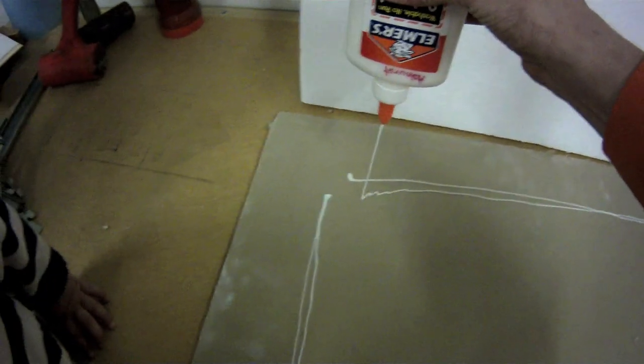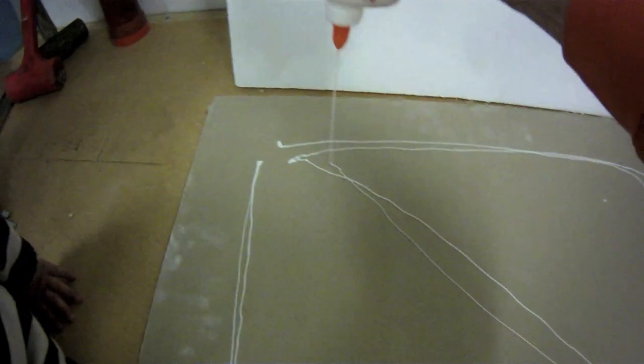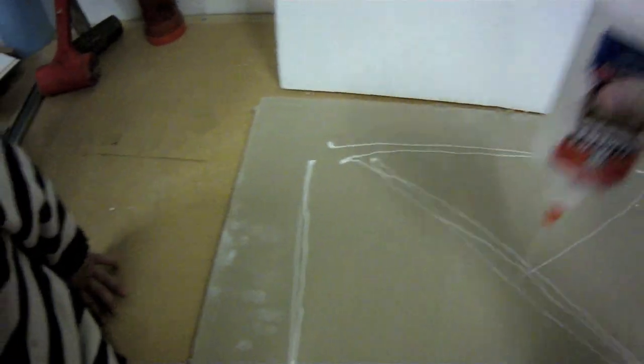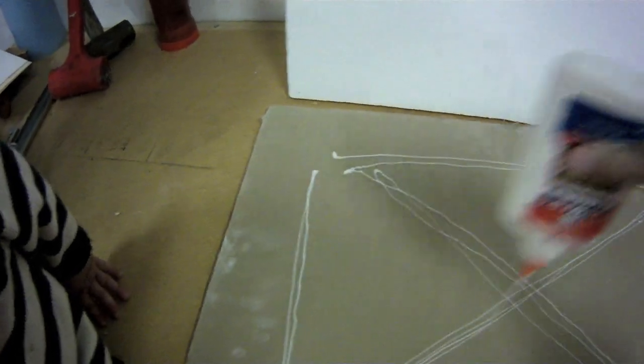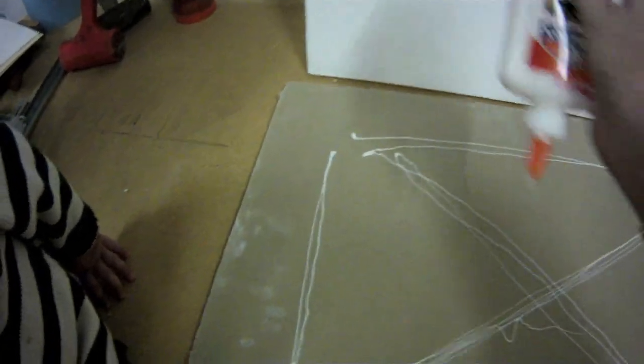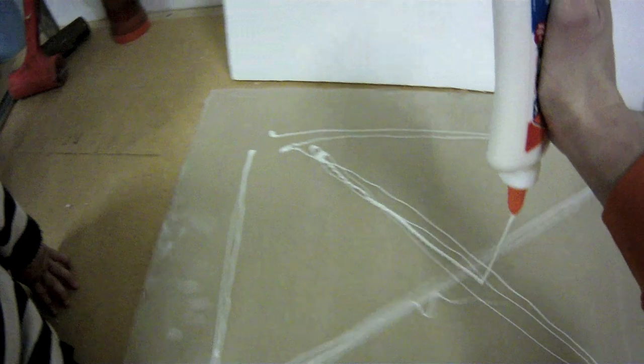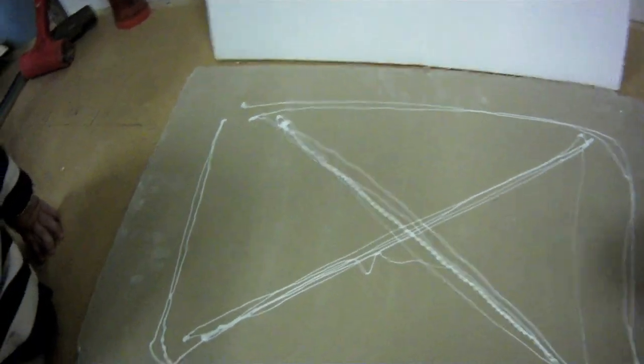It will provide all the adhesion that we need to keep these things in place. We'll just glue the first one on and then we'll throw the second one right on top of that. There's enough glue for layer number one.